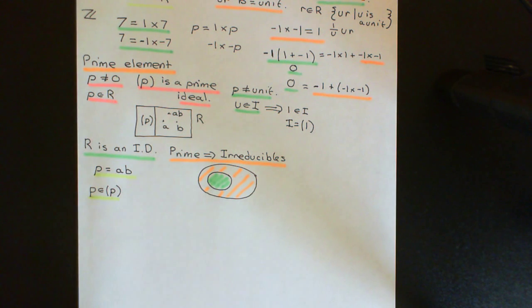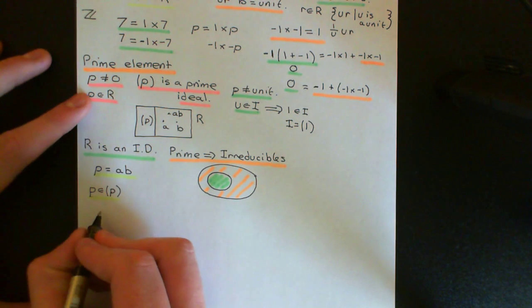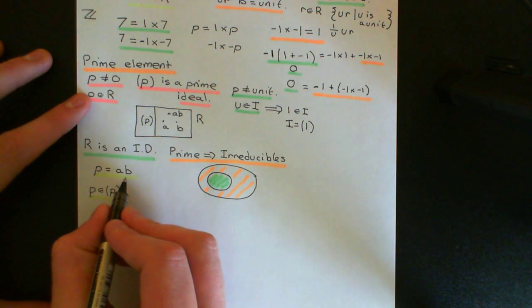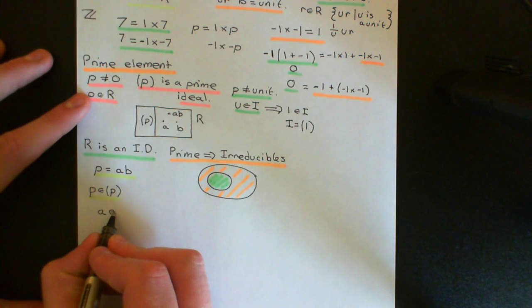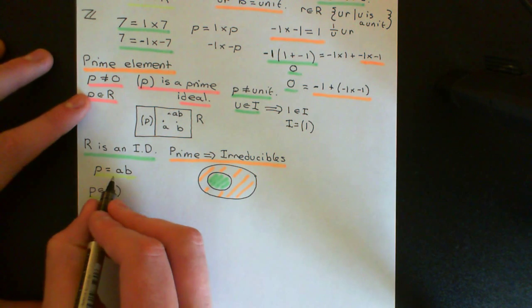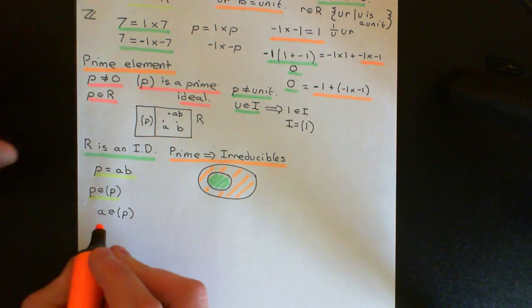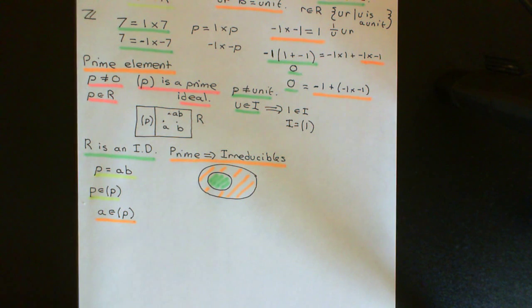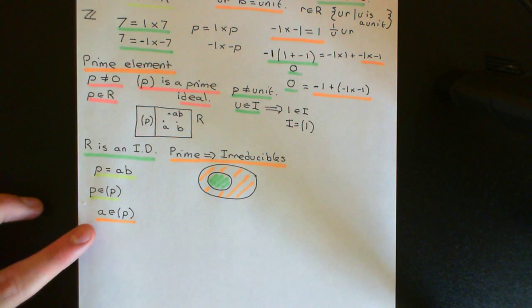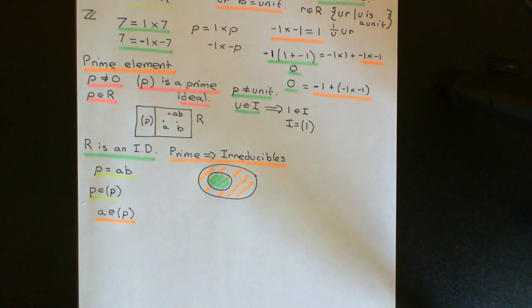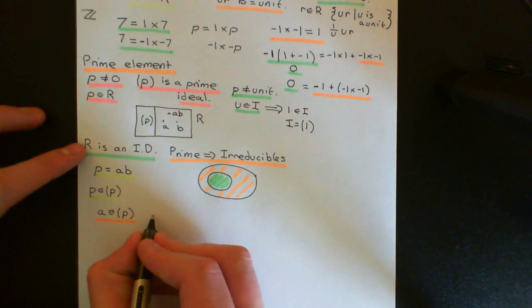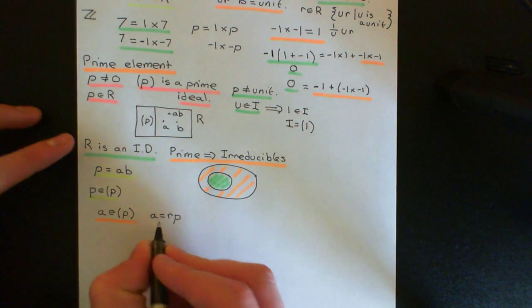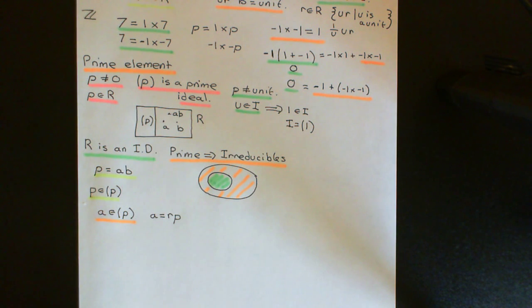Let's say without loss of generality that a is contained within the principal ideal generated by p. If a is in the principal ideal generated by p, then it's just going to be some multiple of p, so we can write a as r times p, where r is some element of the integral domain R. Substituting in for a, we get that p equals r times p times b. Applying commutativity, we get p equals p times r times b.